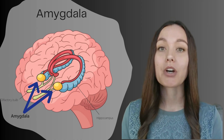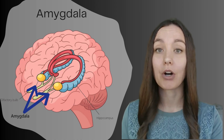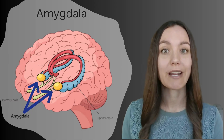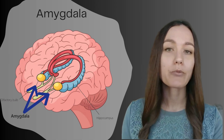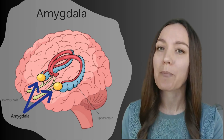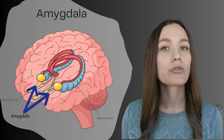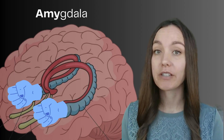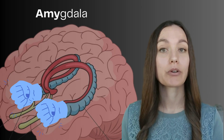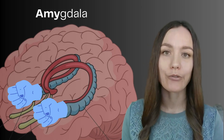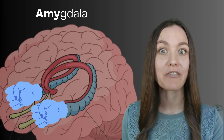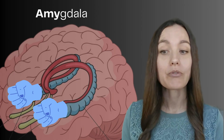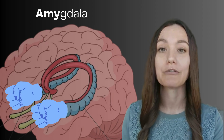The next part of the limbic system is called the amygdala. The amygdala is shaped like an almond — which is where it gets its name, from the Greek word for almond — and it sits right at the end of the hippocampus. The amygdala is mainly responsible for processing emotions, especially fight-or-flight responses, and the emotional responses of fear and aggression. To help you remember its function, focus on the first part of the word — 'Amy' — and think about angry Amy. Angry Amy will remind you that the amygdala is responsible for the emotions of fear and aggression.